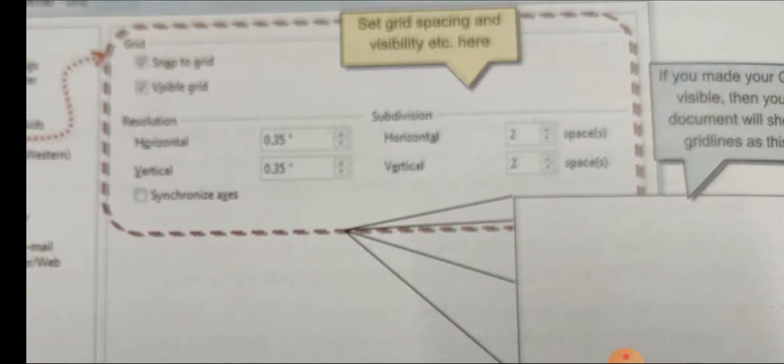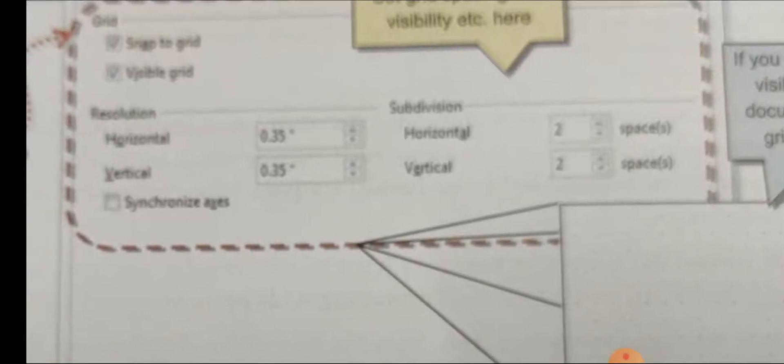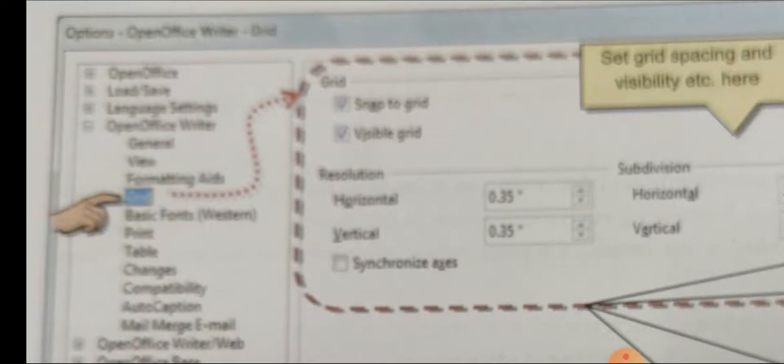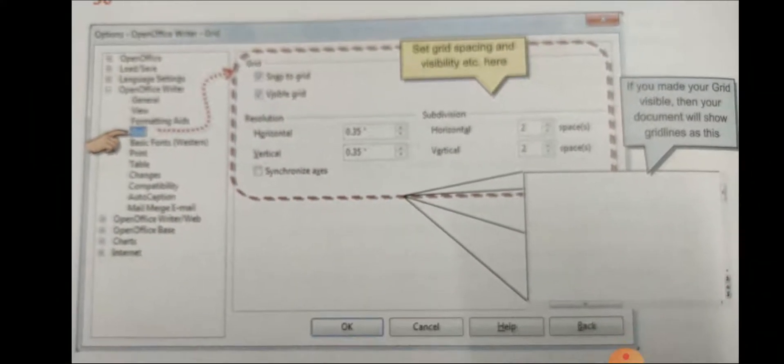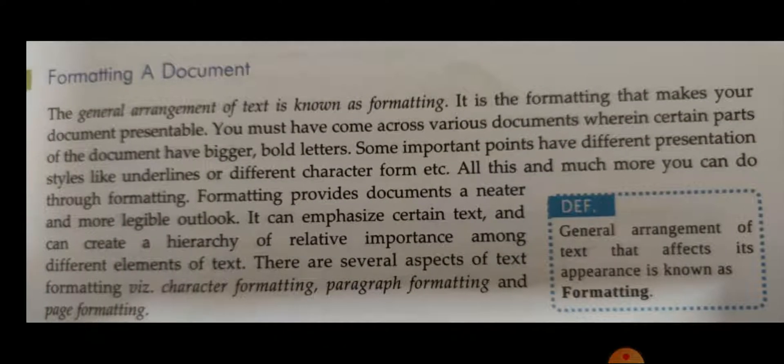There is also a set of spacing and visibility area options. Many options are given in the general section. You can go to grid — if you want a grid on the screen work area, you can choose that. Formatting a document means general formatting: making the text bold, italic, or underline, changing the font, font size, and color. All of this is known as formatting a document, and our text may look good only when it is formatted well.